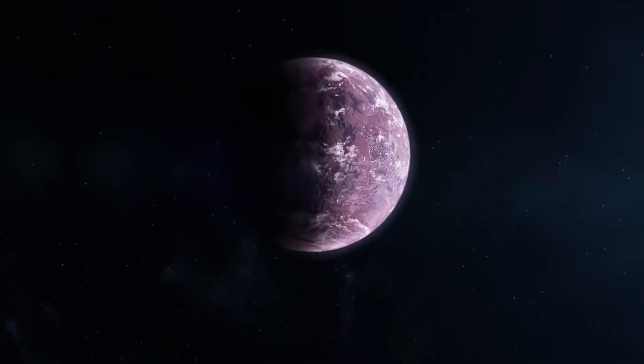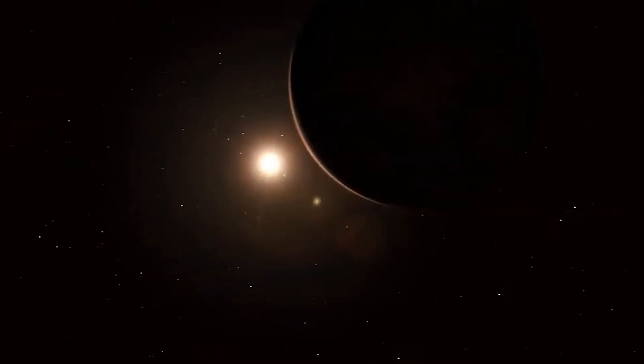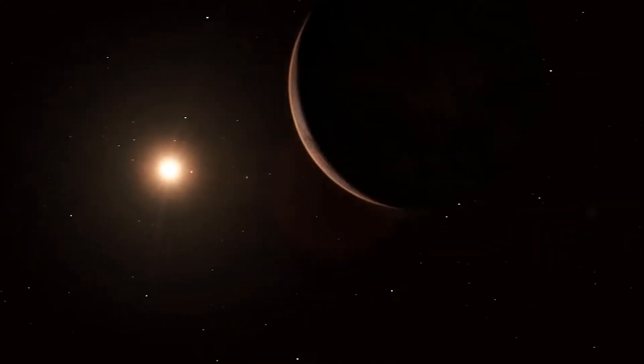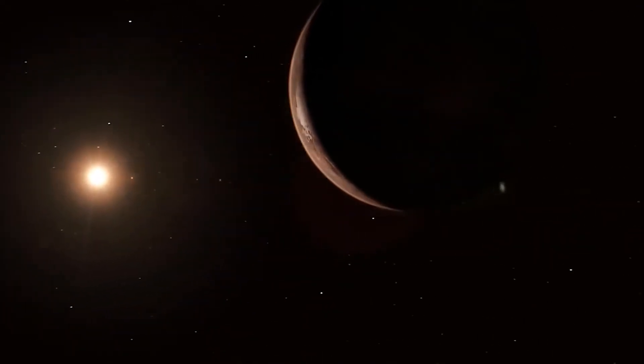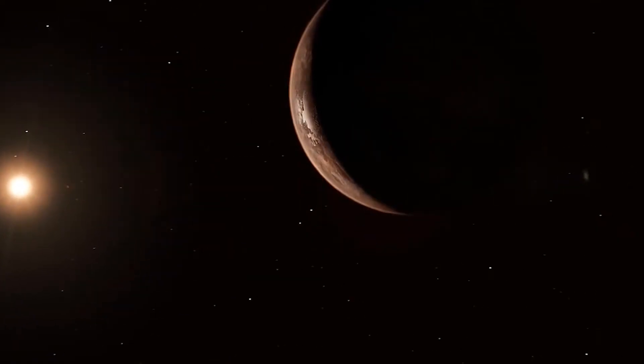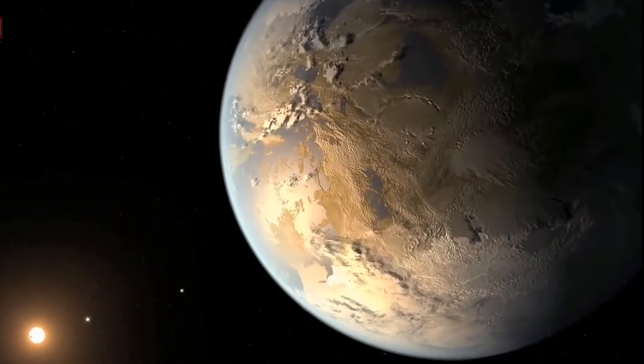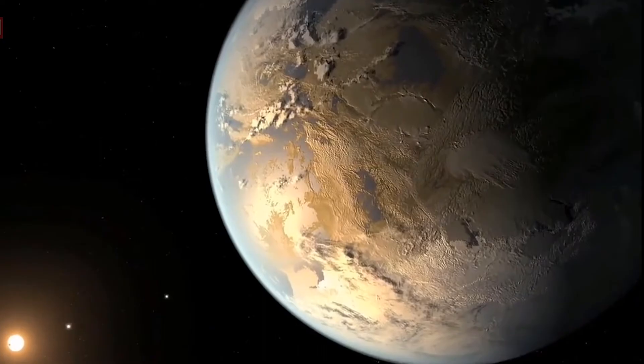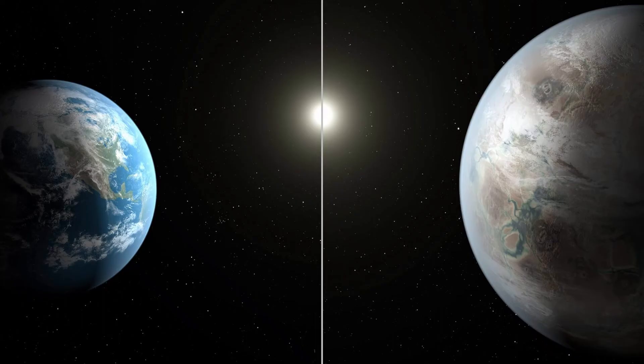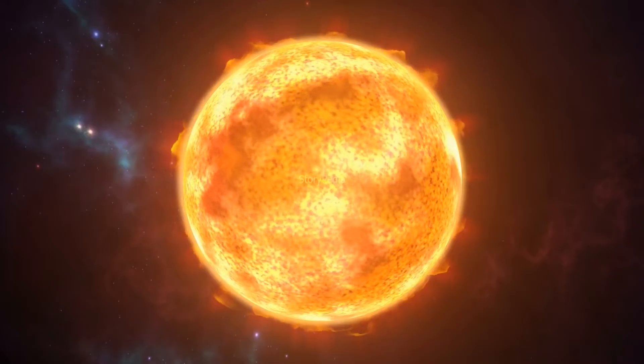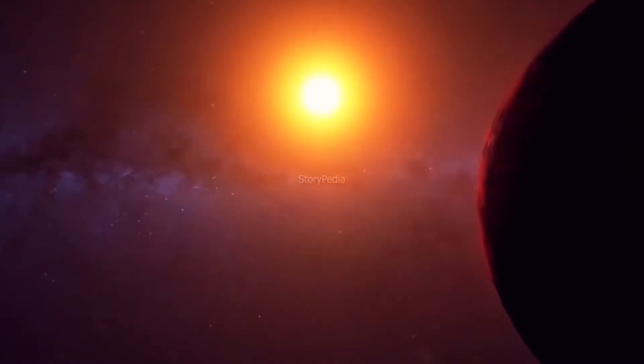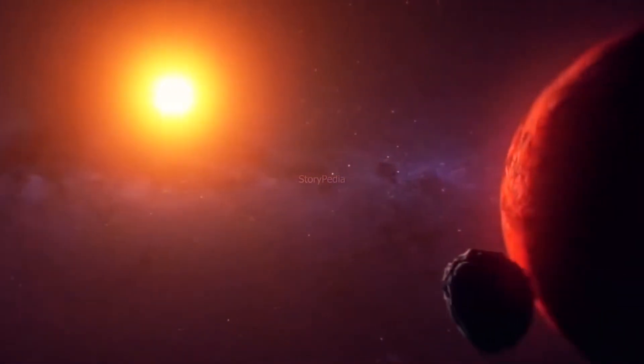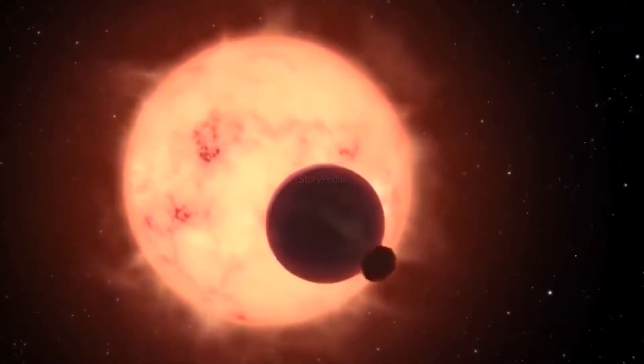Number seven, Kepler-452. NASA said that this planet, whose discovery was announced in 2015, is the first near-Earth-sized planet to revolve around a star the size of the Sun. The parent star of Kepler-452b, which is 60% bigger than Earth, is 10% bigger than the Sun.